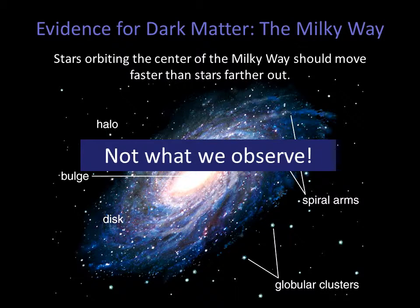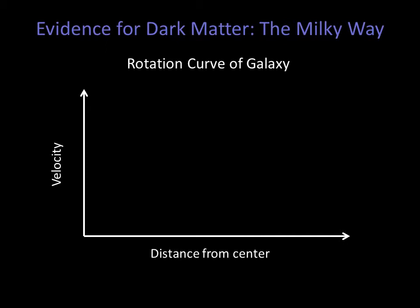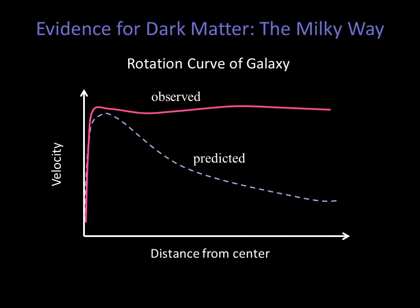If we were to make a rotation curve of our galaxy — that is, a plot of the velocity of the stars in our galaxy versus their distance from the center — we would expect to see something like this: fast-moving stars near the central bulge and slower ones farther out. But instead, this is what we see: the rotation curve is flat. Stars near the center are moving at the same velocity as stars on the edges.